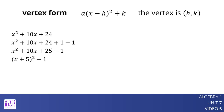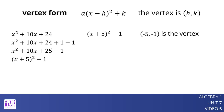When written in this form, we can see that the vertex of the graph representing x squared plus 10x plus 24 is (-5, -1).